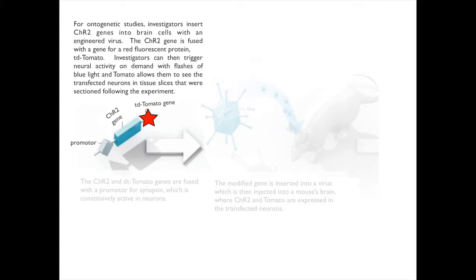Investigators can then trigger neural activity on demand with flashes of blue light, and tomato allows them to see the transfected neurons in tissue slices that were sectioned following the experiment.